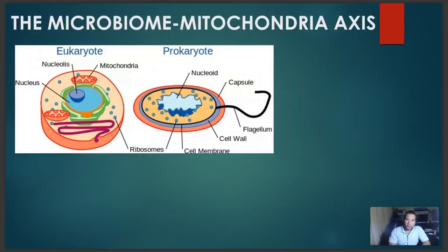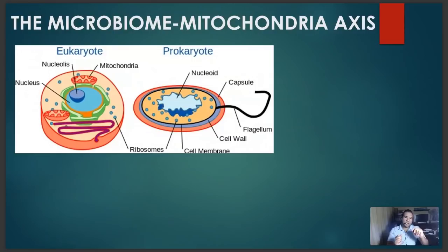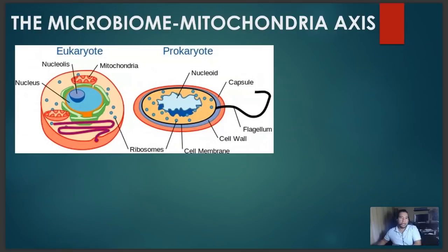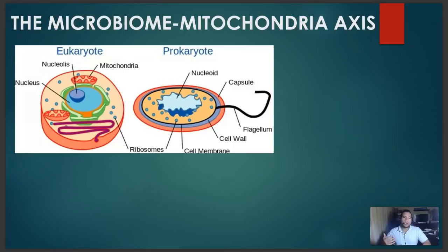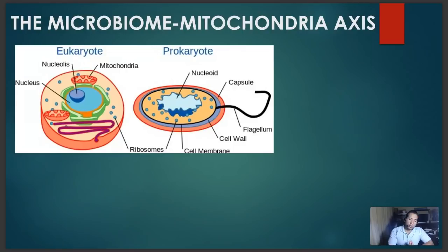In order to understand solutions, we have to understand the things that influence the mitochondria. One really important thing that has come to light over the last six or seven years is the microbiome-mitochondrial axis. There's a lot of good presentations and papers on mitochondrial health, but I didn't find a lot on the microbiome-mitochondrial axis. It's important for people to understand how the microbiome influences all of our mitochondria, so that when looking at therapeutic value, you can understand how to utilize the microbiome to help with free radical disease.